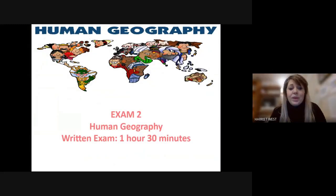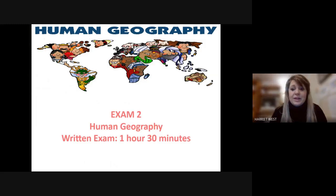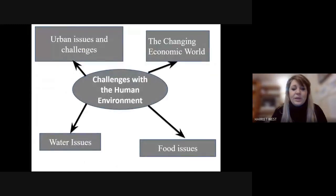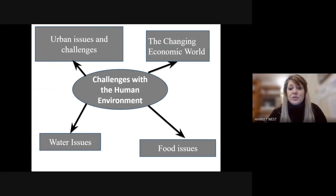That was paper one. Then when we go into Year 11, we start to look at human geography. You'll probably find one that you prefer, or you might just enjoy both equally. Within human geography, we look at urban issues and challenges. We look at urbanisation — by 2050, 70% of the world's population is going to live in an urban area, a city. So it's really important that we understand what these issues are going to be and how we can try to make it more sustainable.